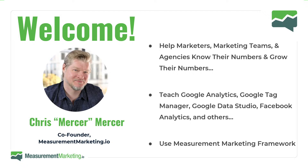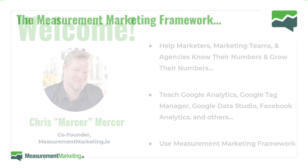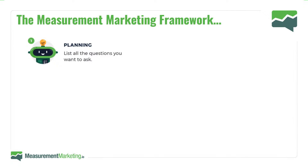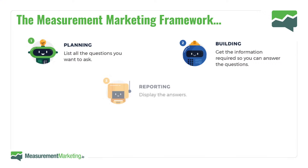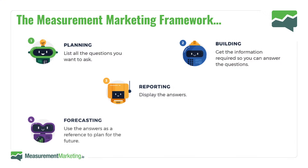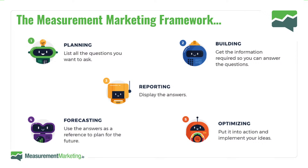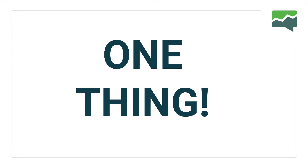We do that through the five-step Measurement Marketing Framework. You always plan first, then you build once the plan's done, then you report — looking at Data Studio or spreadsheets or built-in reports in Google Analytics. Based on that information, you start to forecast what should be happening in the near future, and ultimately you measure against your forecasts to find where you hit the mark and where you don't — and now you know where to optimize.